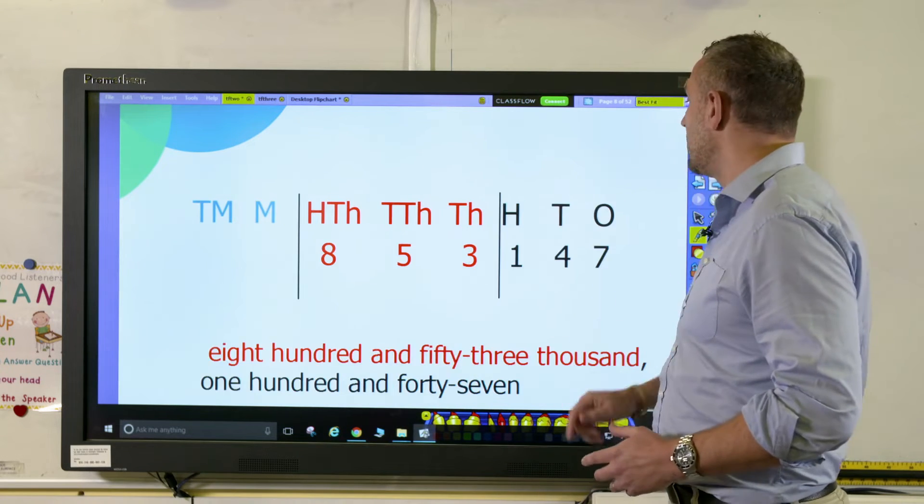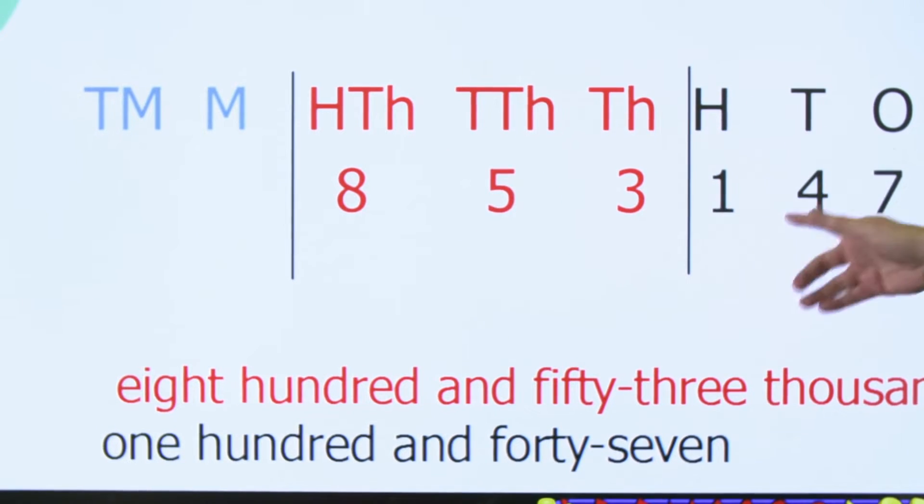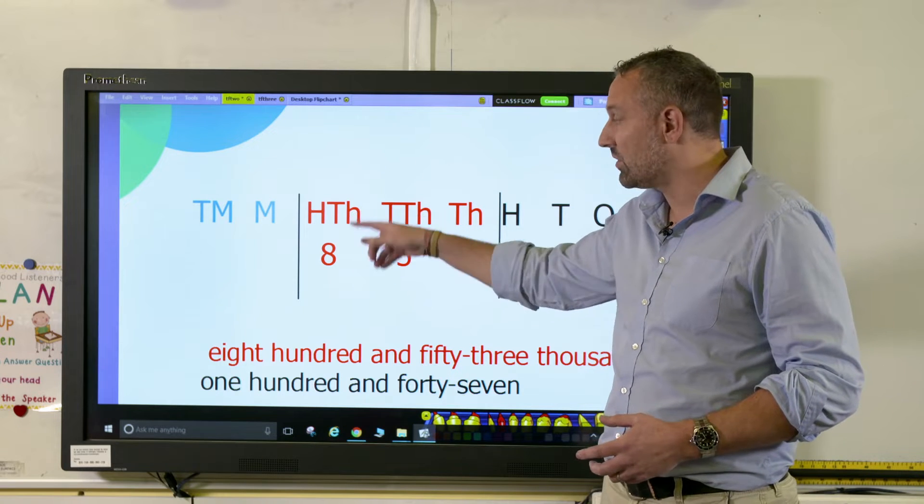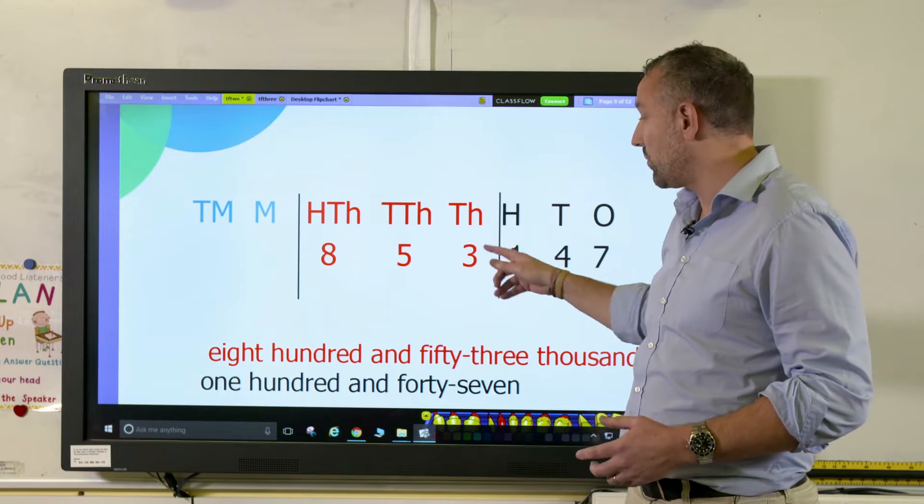If we were to make this number larger, we now have 853,147. And again, the eight is in the hundreds of thousands, so it's eight hundred thousand. Five in the tens of thousands and three in the thousands.